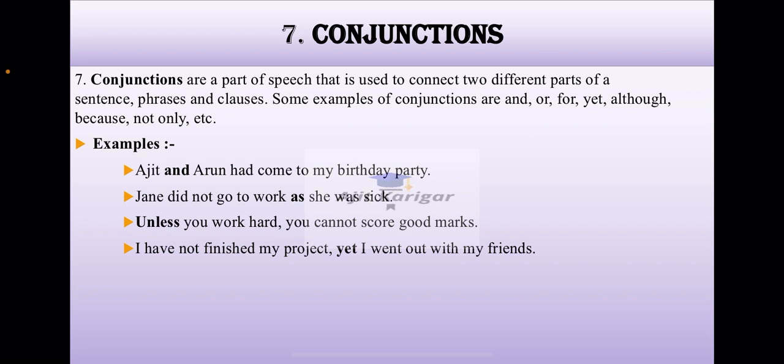Ajit and Arun had come to my birthday party. Here we have connected two names in a sentence, that is Ajit and Arun. And becomes the conjunction. Conjunctions are used to connect one sentence or one phrase to another or one clause to another clause. Jane did not go to work as she was sick. Unless you work hard, you cannot score good marks. I have not finished my project yet. I went out with my friends.